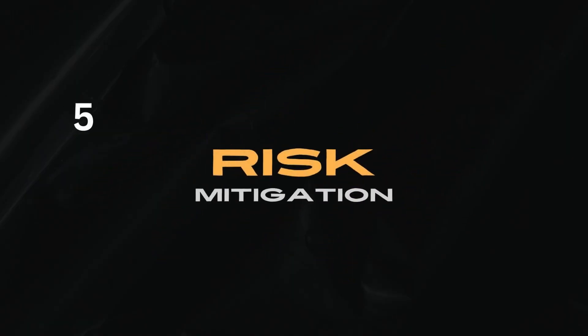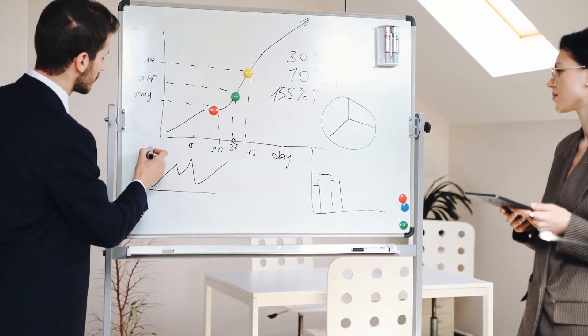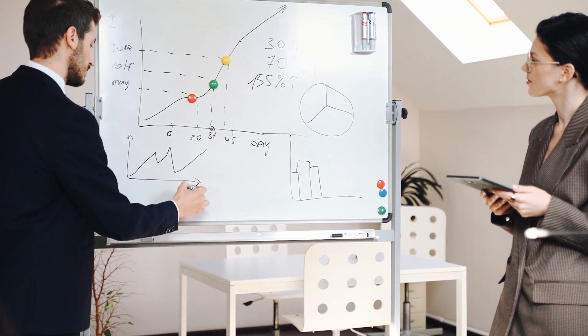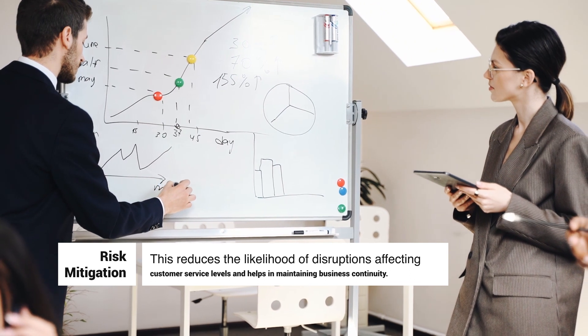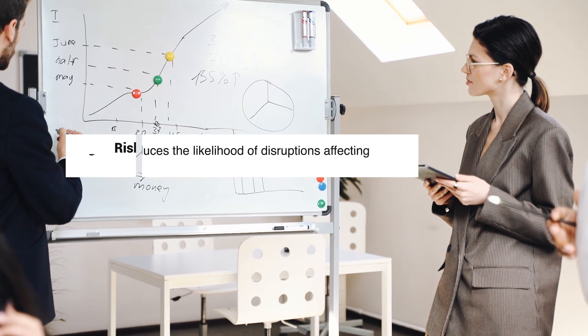5. Risk Mitigation: By monitoring supply chain activities in real-time, companies can identify potential risks early, develop contingency plans, and take proactive measures to mitigate the impact of disruptions. This reduces the likelihood of disruptions affecting customer service levels and helps in maintaining business continuity.